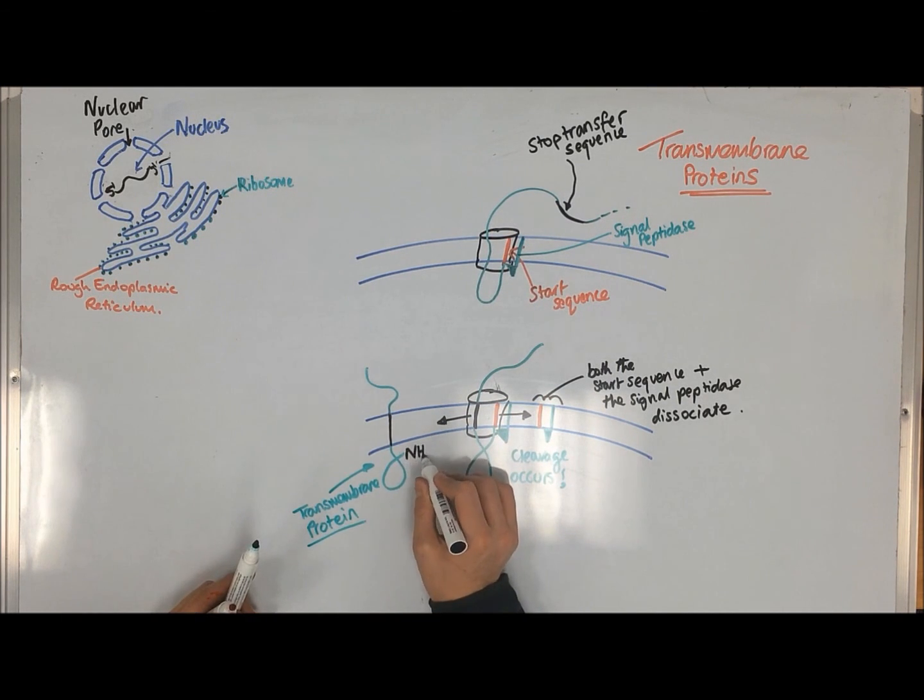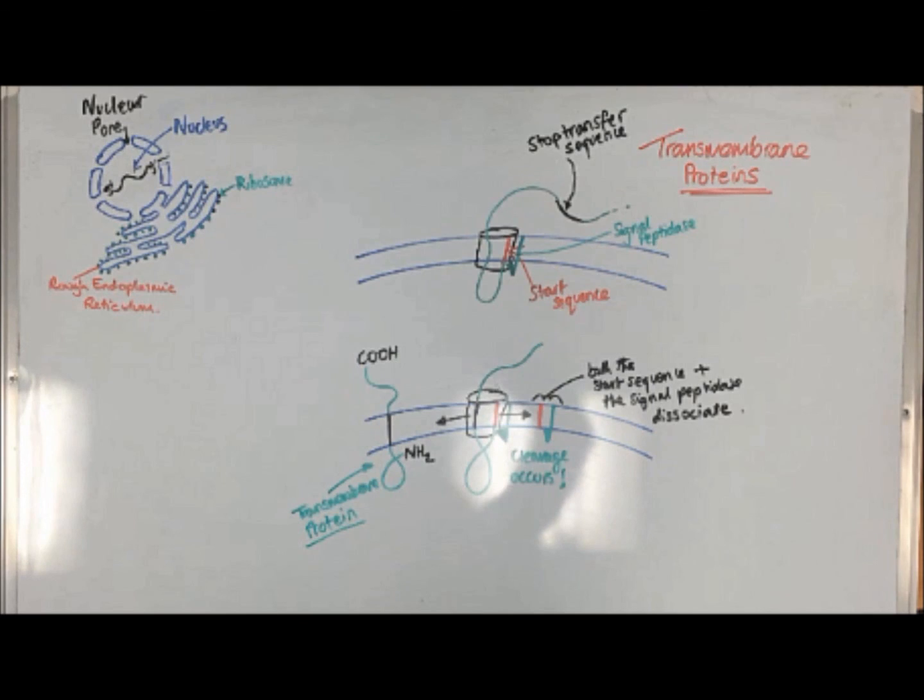Use this video to create a model answer for the following question: Explain the signal hypothesis and the two proteins that are produced using membrane-bound ribosomes.